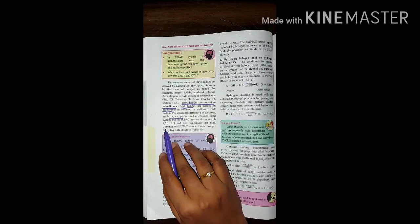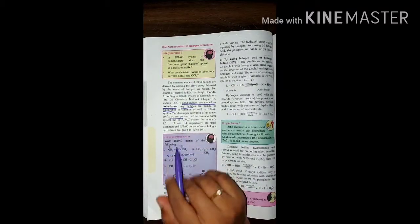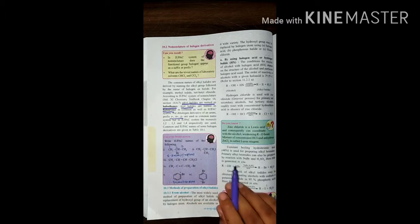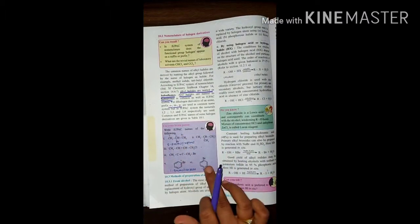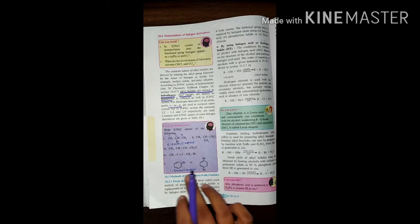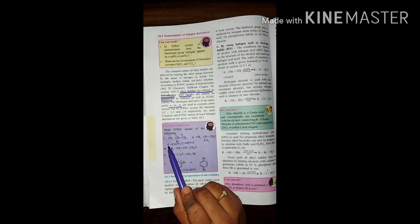So ortho-meta-para and 1,2; 1,3; 1,4 are for dihalogen derivatives. Let me solve one example for you.